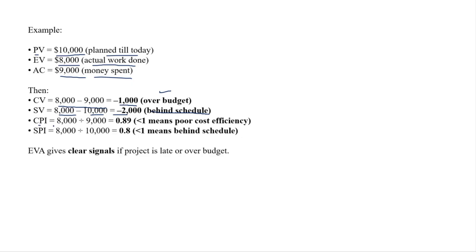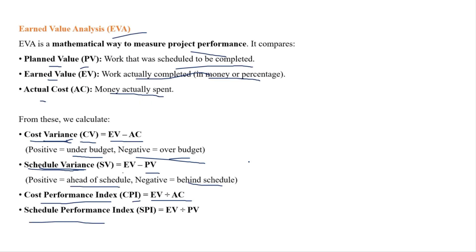Then CPI = EV divided by AC = 8000/9000 = 0.89. Less than 1 means poor cost efficiency. SPI = EV divided by PV = 0.8. Less than 1 means behind schedule. So EVA gives a clear signal if the project is late or over budget — it tells us whether the project is inside or outside schedule and budget.